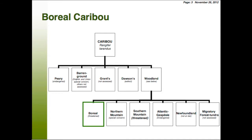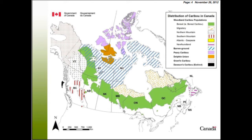One of them is boreal caribou, which occurs throughout most of the provinces and territories in Canada. Some other fairly common ones are northern mountain and southern mountain caribou, and COSEWIC has now recommended a third mountain type — central mountain caribou. The other types mainly occur farther east: Atlantic, Newfoundland, and migratory forest-tundra caribou.